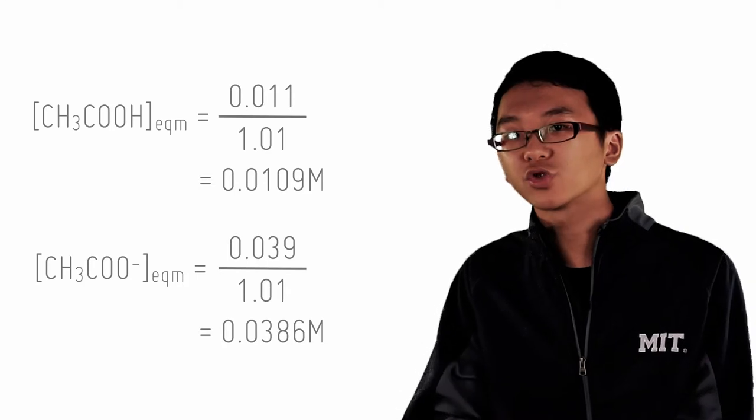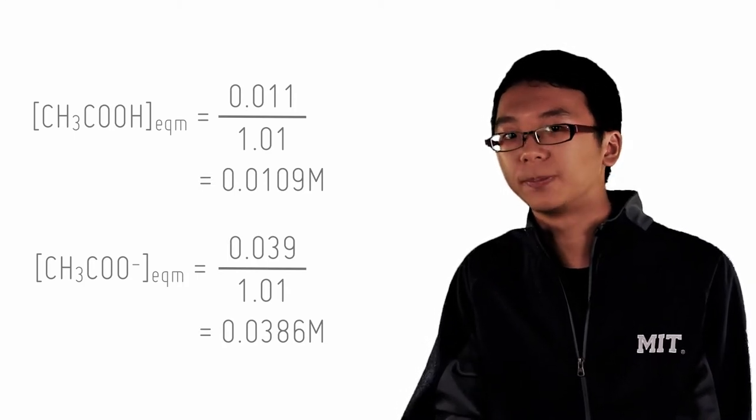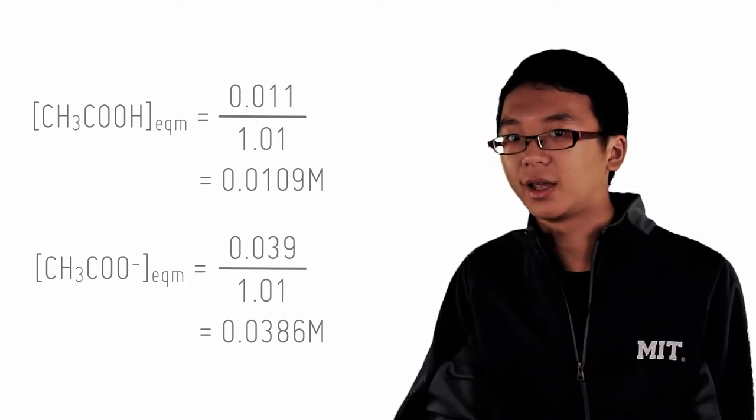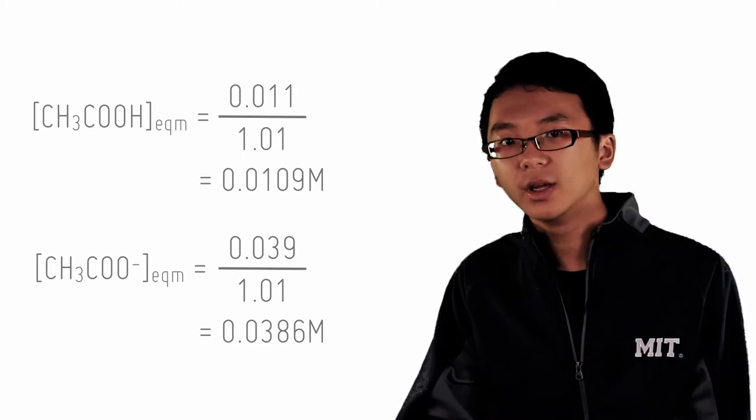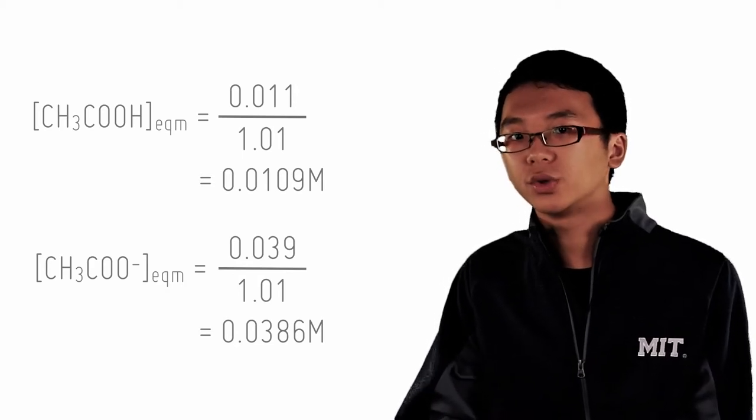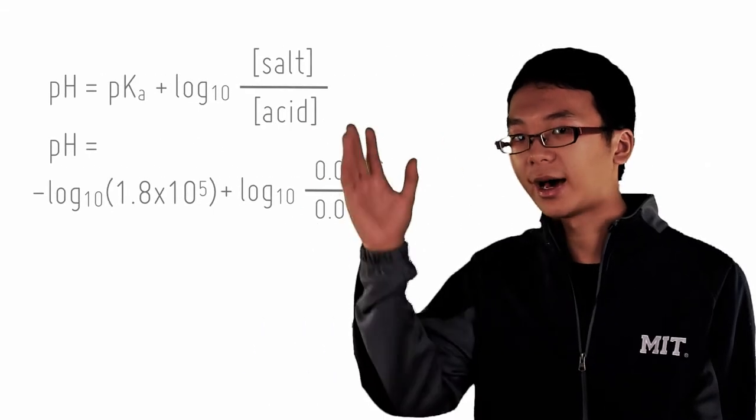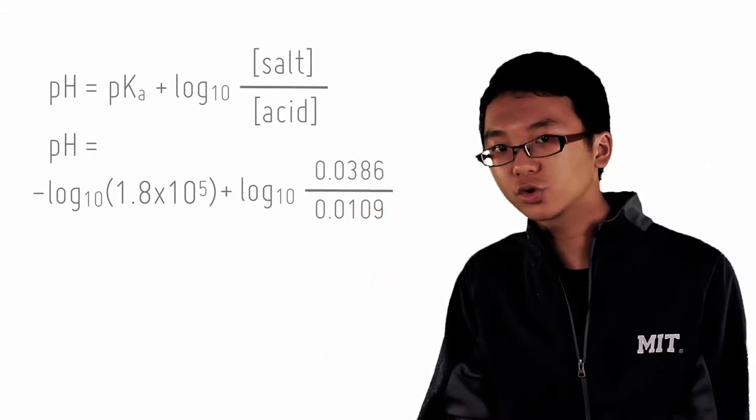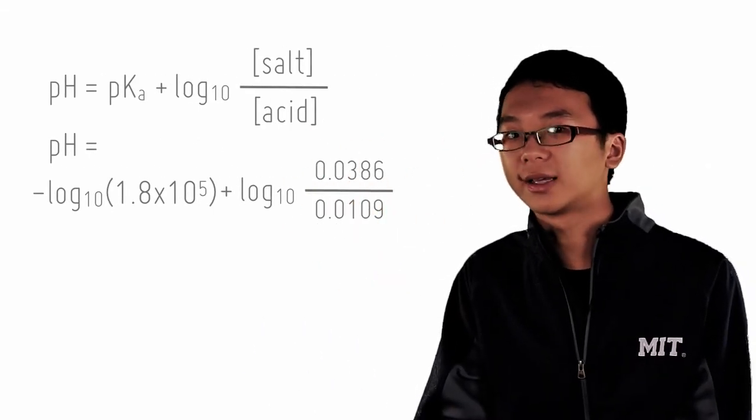And we can get the concentration of ethanoic acid and ethanoate after the buffer mops up the acid and reaches the new equilibrium. So let's find the new pH using the HH equation. Plugging the values from the ICE table inside this equation, the concentration of ethanoate and ethanoic acid,